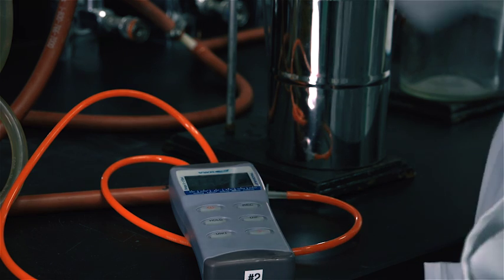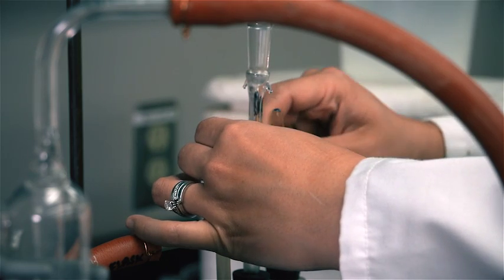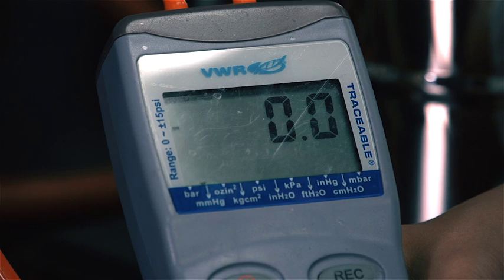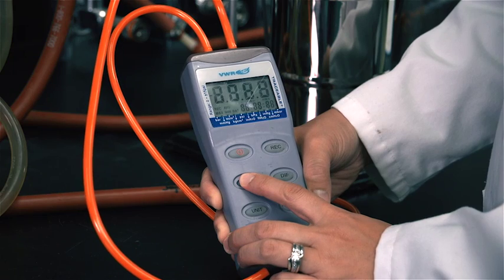To zero the manometer, make sure the vacuum is off and the system is open to the atmosphere. Turn on the manometer and push the hold button for 2 to 3 seconds.